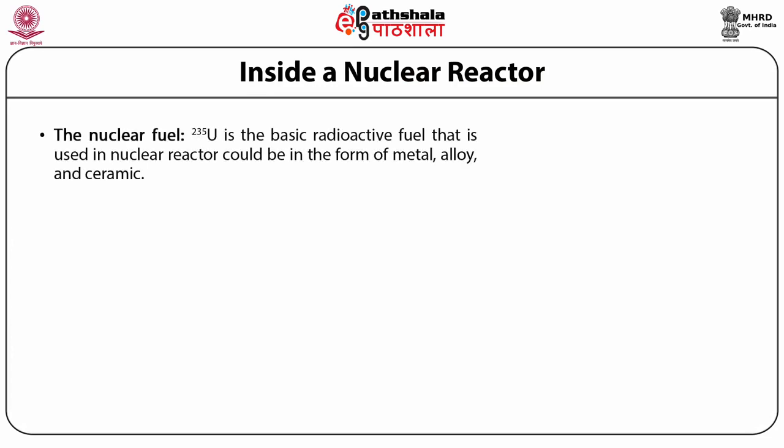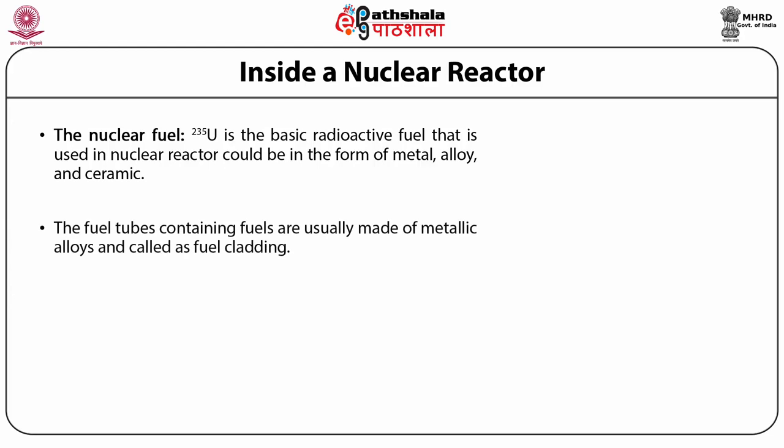The nuclear fuel: 235U is the basic radioactive fuel used in a nuclear reactor, and could be in the form of a metal, an alloy, or a ceramic. Generally, the pellets of uranium oxide are organized in fuel tubes with the moderator to form fuel rods. The fuel tubes containing fuels are usually made of metallic alloys and called fuel cladding. These fuel claddings play an important role in the nuclear reactor as they provide mechanical support to the fuel, prevent the fuel from corrosion from the coolants, and protect the fission fragments.